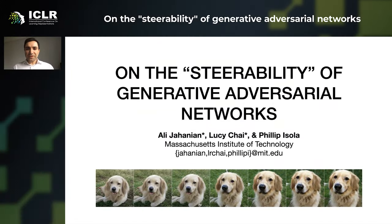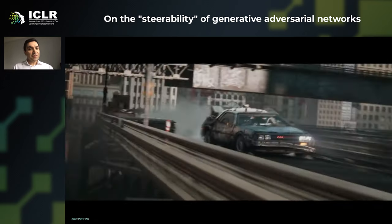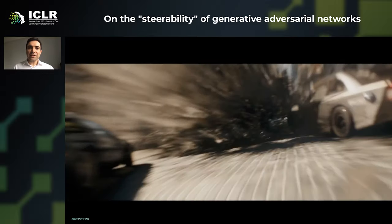Hi, I'm Ali, and I'm presenting our work with Lucy and Philippe on the stability of generative adversarial networks. Look at this image — it is created by a GAN from scratch with high quality and all the details. We know that graphics engines can create virtual worlds and navigate through them, so the question is: can we look into the latent space of GANs and reveal similarly rich environments?